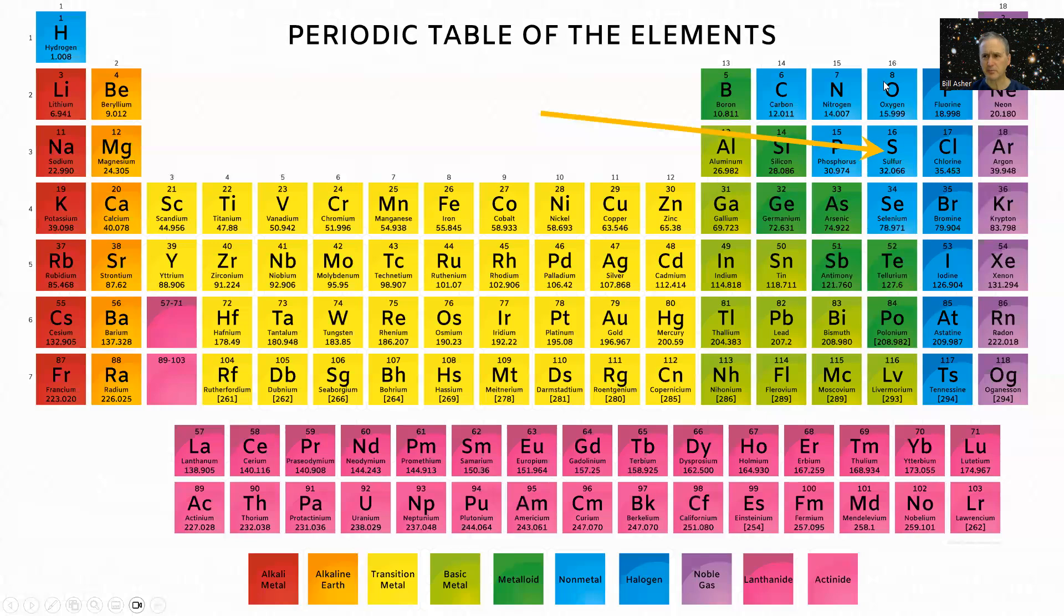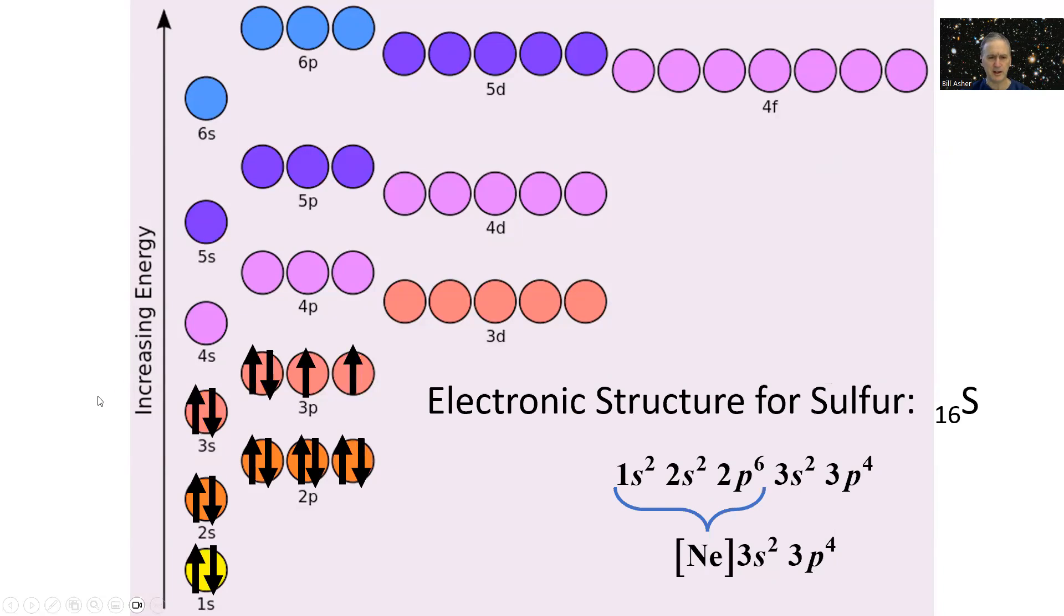Let's look at sulfur, which is in period three, right below oxygen. Sulfur has atomic number 16, 16 protons and 16 electrons. Following the Aufbau principle, it fills up like this. Period two is completely filled, and then it's got two electrons in the 3s and four electrons in the 3p.